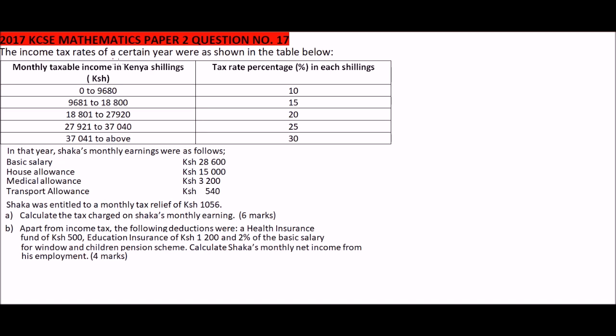Welcome to revision of mathematics. Today we are going to look at the 2017 KCSE Mathematics Paper 2, Question 17, which is about income tax. Every employee is supposed to pay tax to the government to cater for public facilities. The table shown gives the rates at which one is taxed.